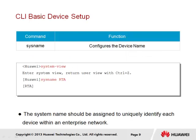An enterprise network is likely to have multiple devices, possibly of the same type, making it increasingly difficult to identify one device from another. So it becomes necessary to specify a system name for each device to uniquely identify them. We can do that through the use of the sysname command. To do so, we transition from the user view into the system view using the system-view command, and from the system view we are able to specify the system name using the command 'sysname'. In this case we've changed the name from Huawei to RTA.